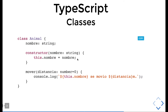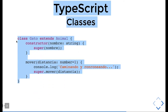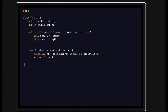Now we will talk about one of the most important things: access modifiers in a class — public, protected, and private — and how we can protect our variables and functions in the ES6 class definition.